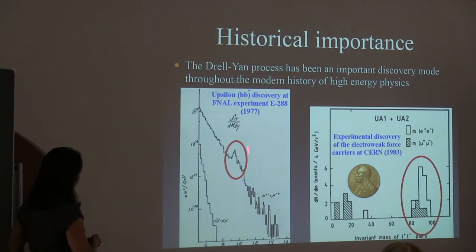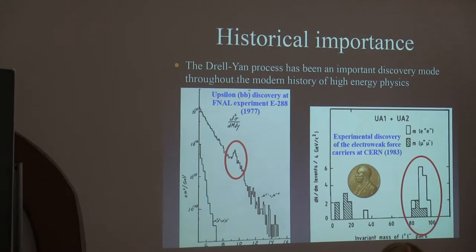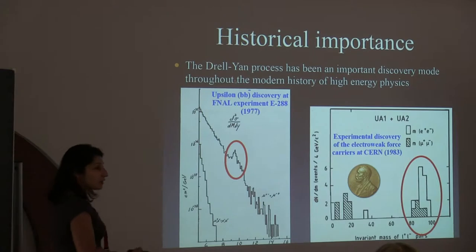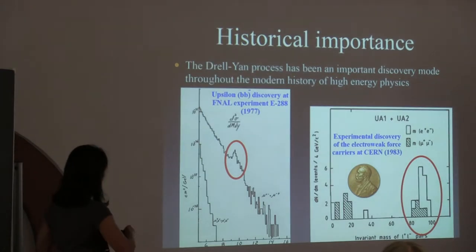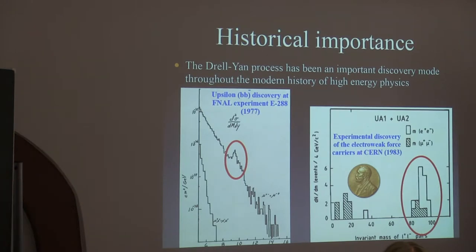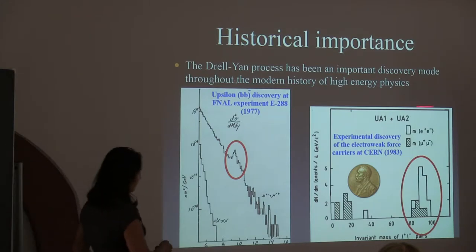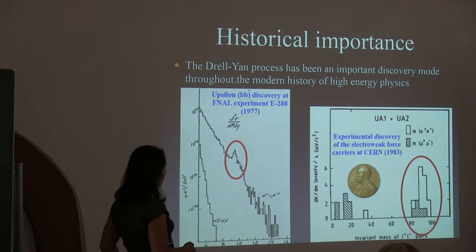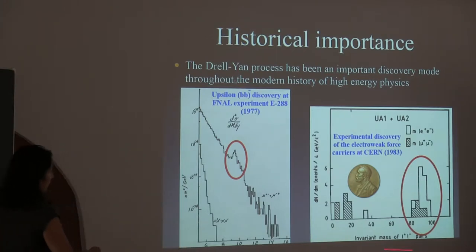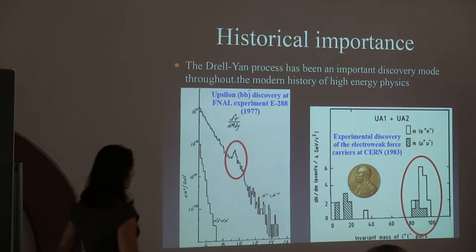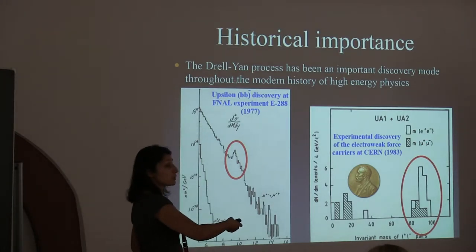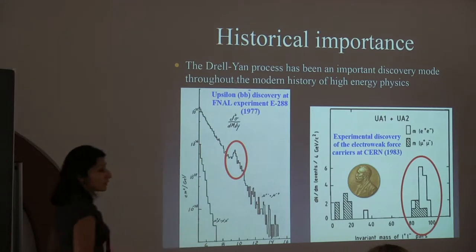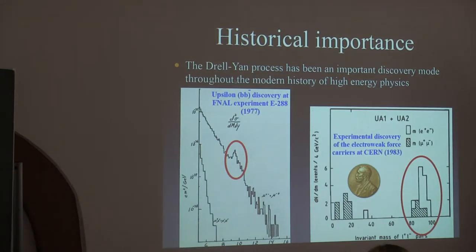Drell-Yan was the process where many particle discoveries were made. The Upsilon resonance was discovered in 1977 at Fermilab experiment E288 — this was the discovery of the b quark, since Upsilon is a bound state of a b-bbar pair. The Z boson was discovered in Drell-Yan at UA1 and UA2 at CERN in 1983 by studying the leptonic invariant mass. The W boson was also discovered there, and the discovery of the Z was awarded the Nobel Prize as it helped establish the standard model.